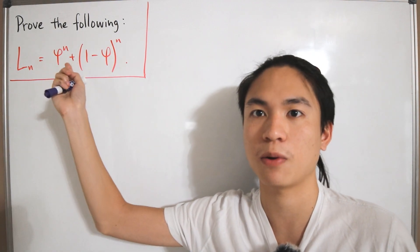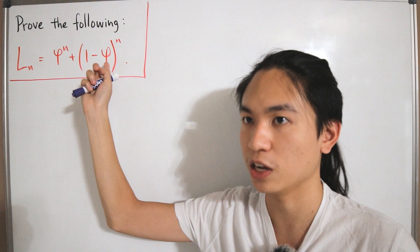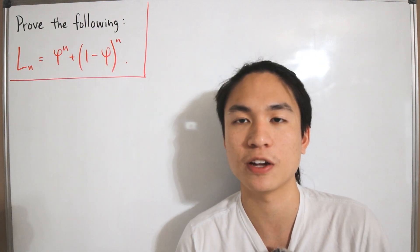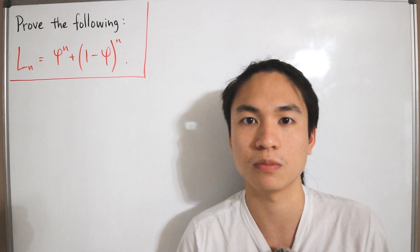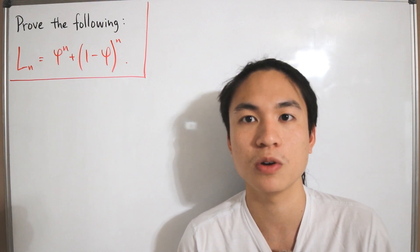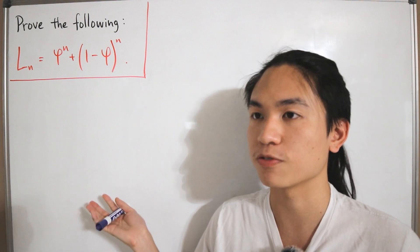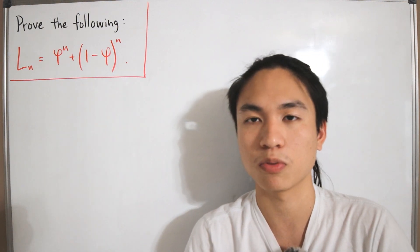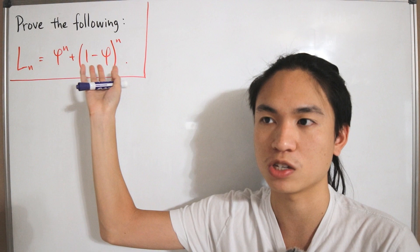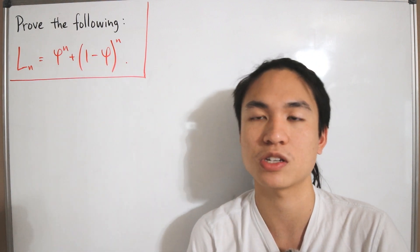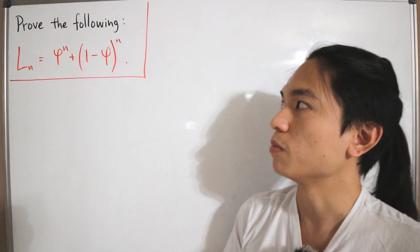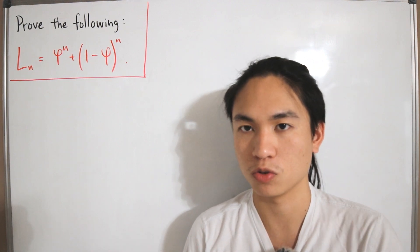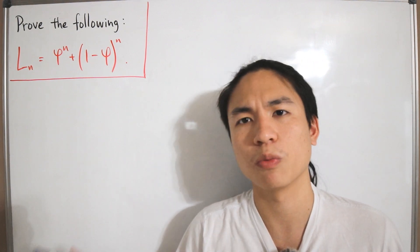For Fibonacci numbers, Binet's formula has phi to the power n minus (1 minus phi) to the power n, divided by the square root of five. That derivation is linked in the description below. Binet's formula for Fibonacci numbers will actually be useful in proving the formula for Lucas numbers.